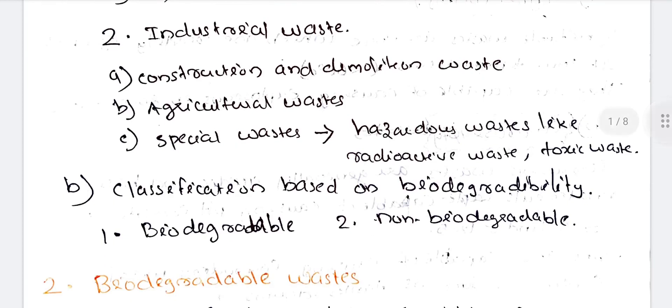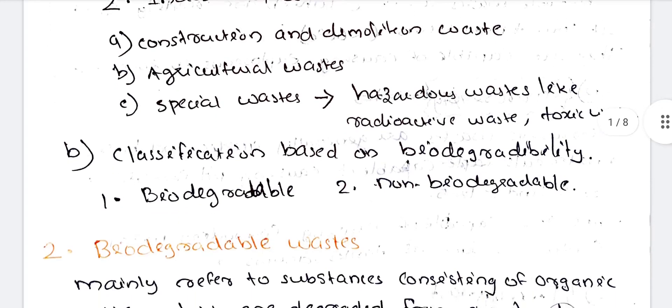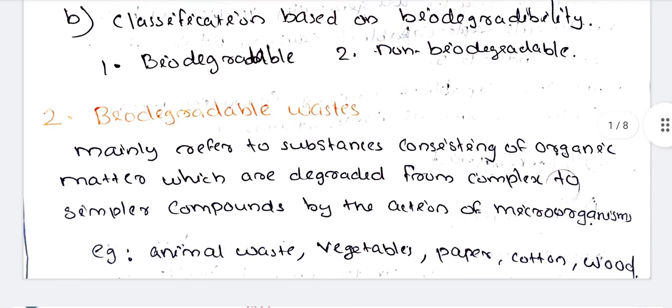The next classification is based on biodegradability — biodegradable and non-biodegradable. Biodegradable waste mainly refers to substances consisting of organic matter which are degraded from complex to simpler compounds by the action of microorganisms. They decompose, for example food waste.